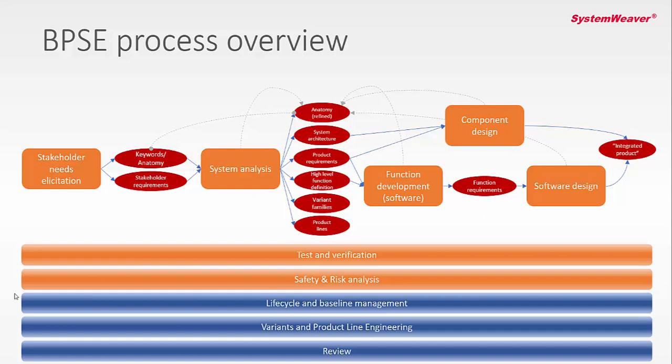Variants and product line engineering are important. We would possibly like to have no variants — just one product — but that is not the way it works today. All products have variability, otherwise you are not really relevant or interesting for your customers. This is something that needs to be addressed, and it is supported by the platform. Finally, we also have review support where you can review your product development artifacts, track review status, and make sure that all potential comments or findings have been managed in a proper way.